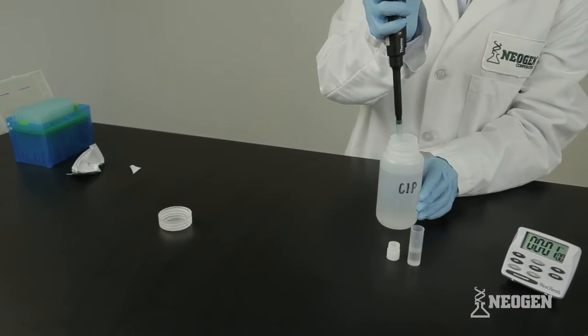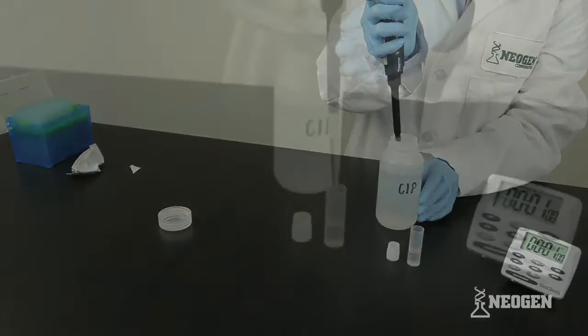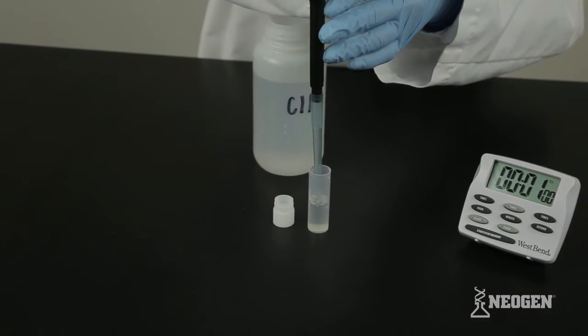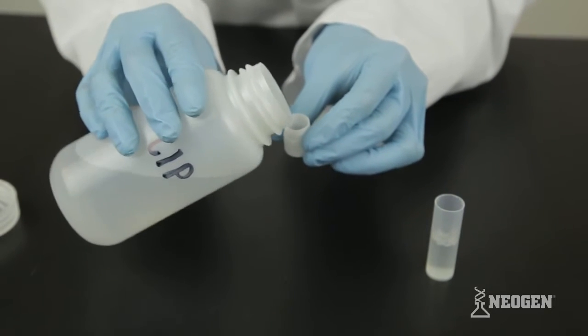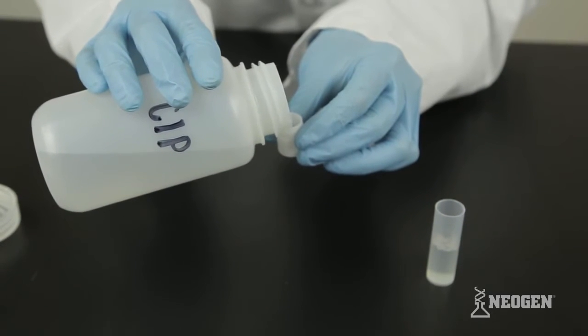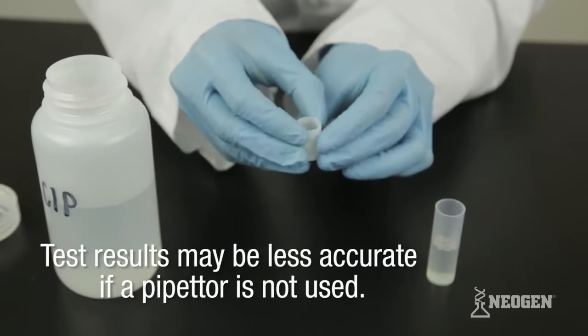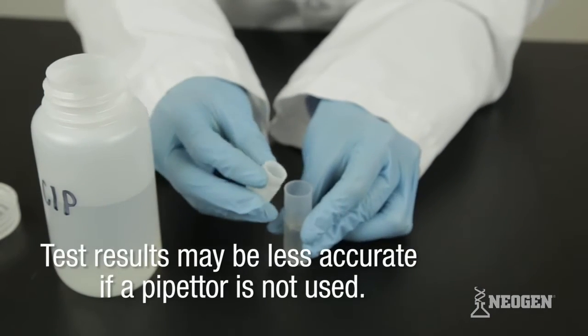Pipet 1 ml of sample into the sample tube. If you don't have a pipetter, you can estimate 1 ml by filling a white sample tube cap up halfway and adding it to the sample tube. Please note that test results may be less accurate if a pipetter is not used.